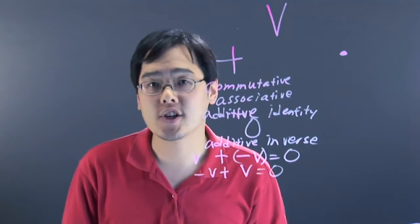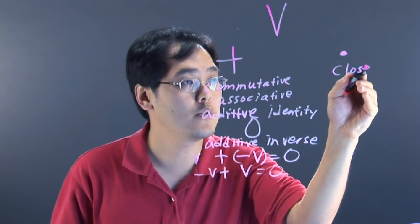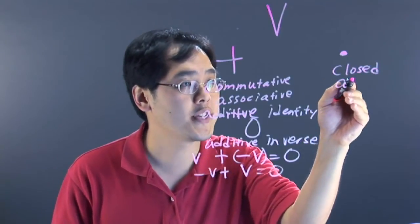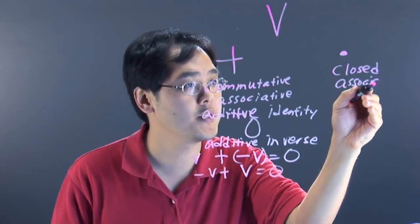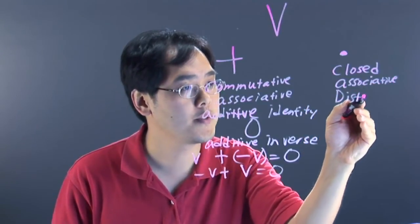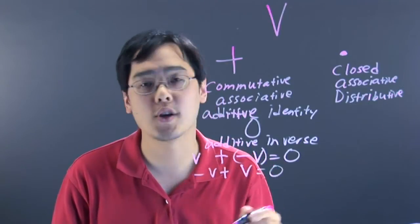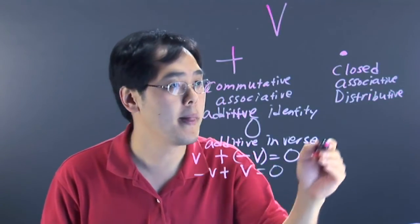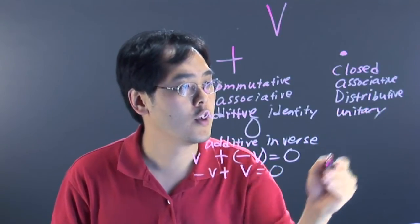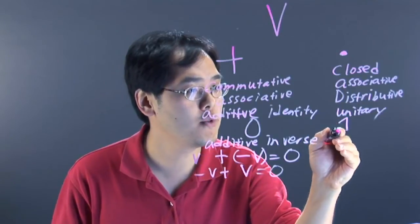With scalar multiplication, it has its own set of properties. It must be closed under scalar multiplication, satisfy the associative properties, and satisfy the distributive properties that we've seen in ordinary algebra. It also has what's called a unitary law or unitary property, in that it must have the element one.